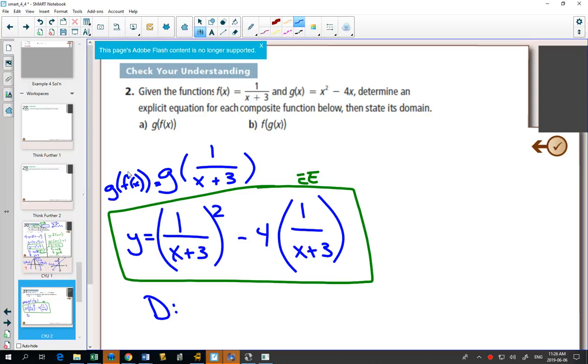Can you see that there's a value that would cause us to divide by 0? So our domain will be that x can't equal negative 3. Can you see that x can't equal negative 3 in the explicit equation? Can you see that x can't equal negative 3 earlier as well?